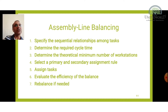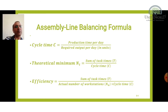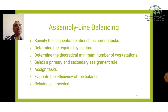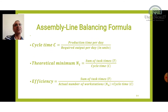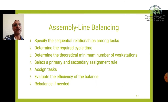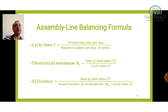Now, the steps involved in line balancing: first, specify the sequential relationship among the tasks from the given question, then draw the network. Next, determine the required cycle time using the formula: production time per day divided by required output per day. Then find the theoretical number of workstations: sum of total task time divided by cycle time. After that, select the assignment rule, assign tasks, and finally evaluate efficiency using the formula: sum of total task time divided by actual number of workstations multiplied by cycle time.